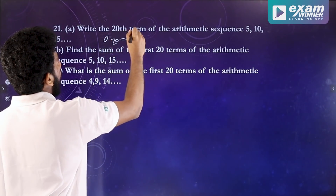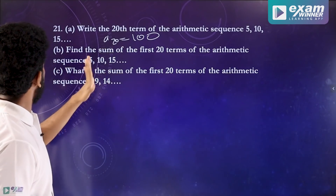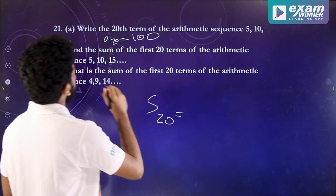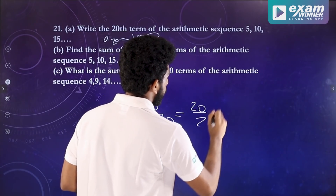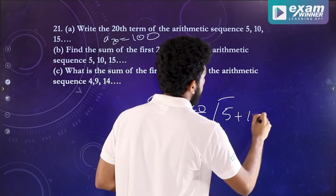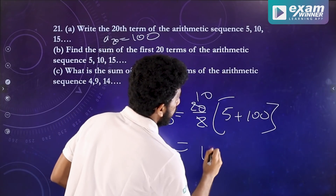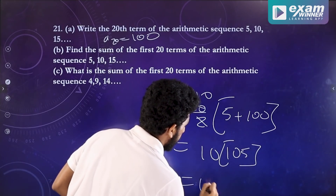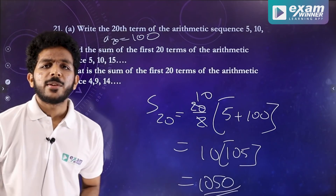A20 is equal to 100. Now find the sum of the first 20 terms of the same sequence. S20 is the sum of 20 terms: (20/2) into (A plus A20), which gives 10 into 105, equal to 1050. So the sum of 20 terms is 1050.